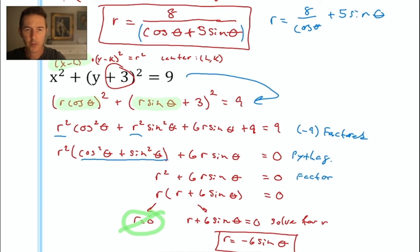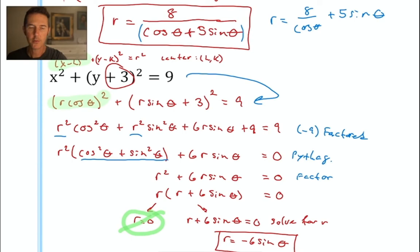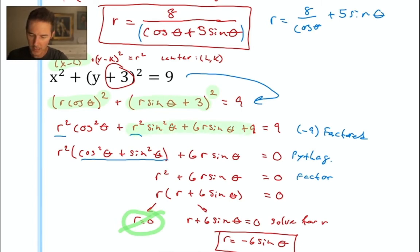I'm replacing x with r cosine theta and y with r sine theta. The plus 3 still has to come down, so you're seeing r sine theta plus 3. All of that goes in parentheses and gets squared, which means we have the pleasure of foiling it and combining like terms. When you square r cosine theta — that's r times cosine theta, times r times cosine theta — the r times r makes r squared, and cosine times cosine gives cosine squared.